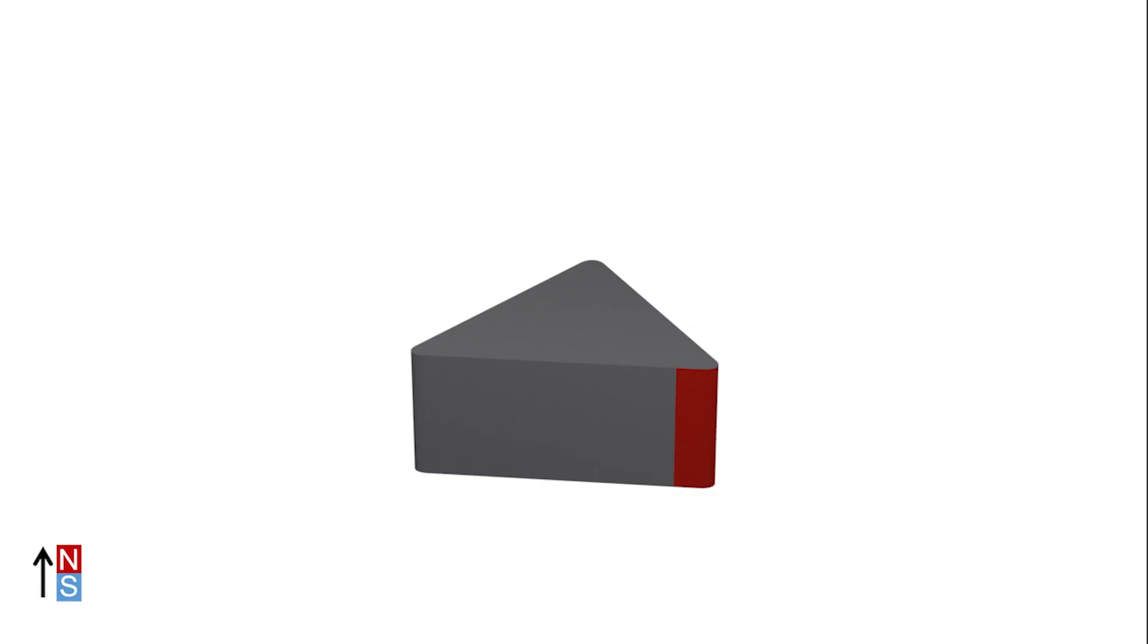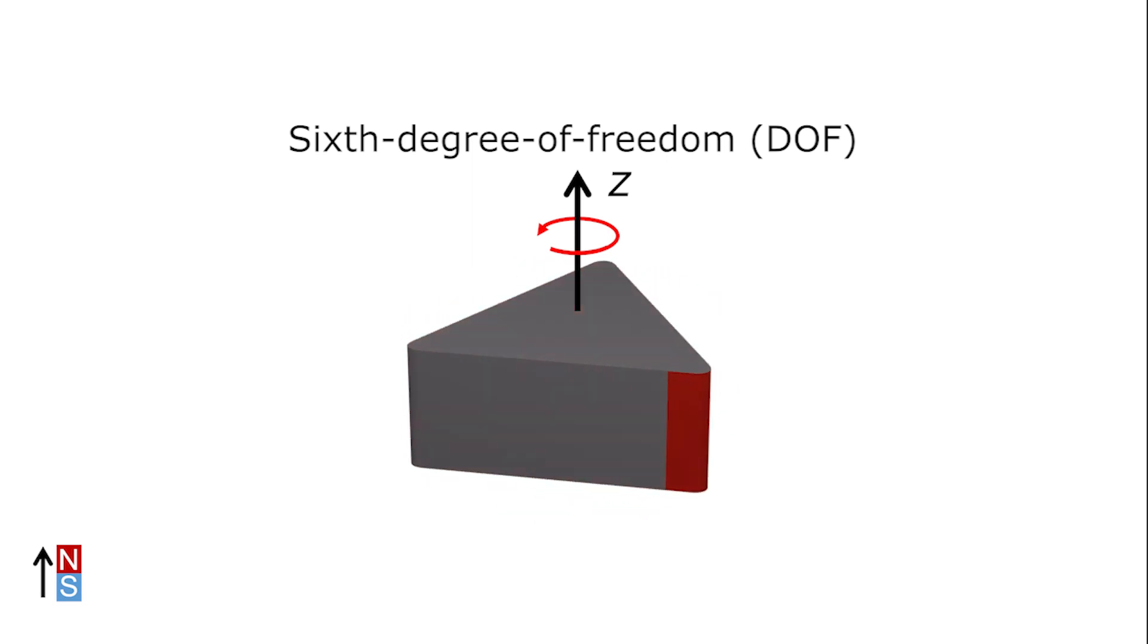For any magnetic robot, let us first define its net magnetic moment as its z-axis. Traditionally, a magnetic robot can be controlled in five degrees of freedom. It can translate along its x, y and z-axis and rotate about its x and y-axis. However, control of its final sixth degree of freedom, or its rotation about its net magnetic moment, is very challenging to achieve.